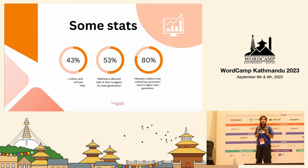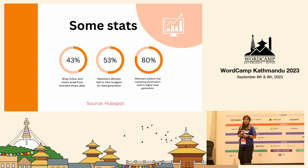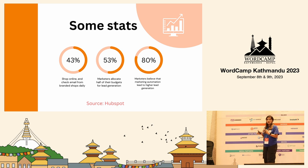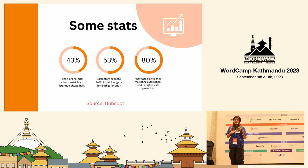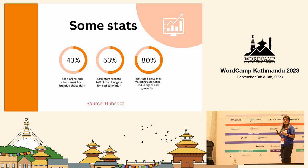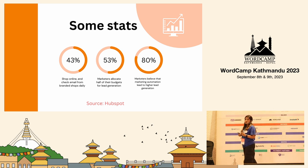Let's look at some stats. 53% of marketers allocate their budgets for lead generation. 80% of marketers believe that marketing automation is the main way of generating leads. And 43% of people who shop online every day check their emails from their branded shops.